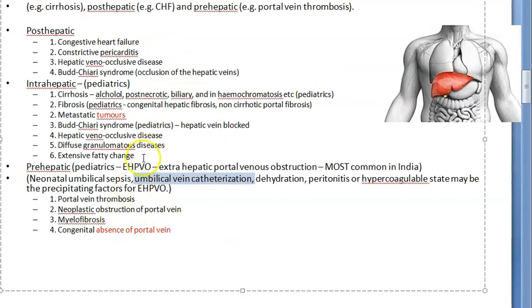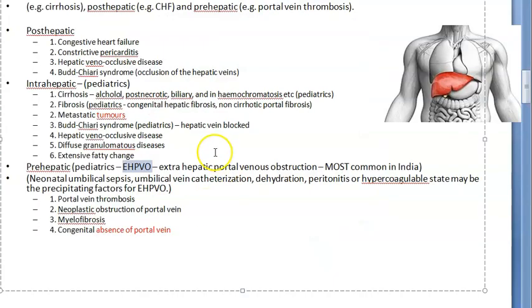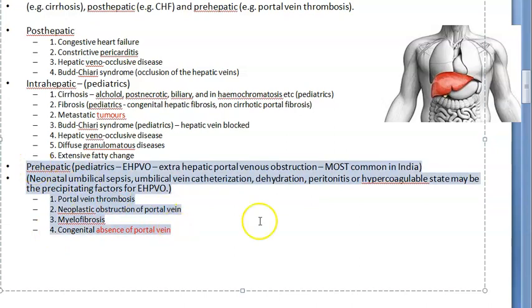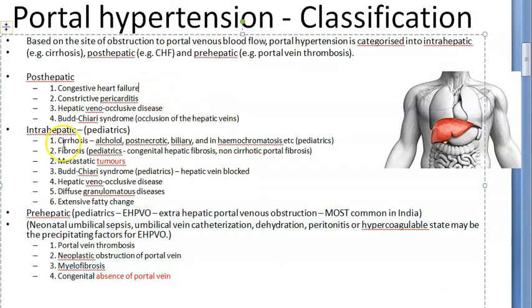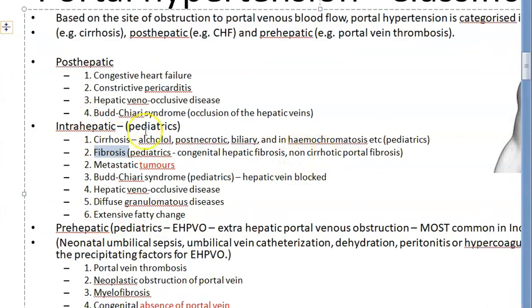EHPVO is a very common cause of paediatric portal hypertension in India — this is the most important thing to remember. Regarding intrahepatic causes, cirrhosis and fibrosis can also occur in paediatrics.